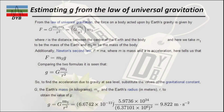To find the acceleration due to gravity at sea level, we substitute the values at sea level — the gravitational constant, the mass of the Earth, and the radius of the Earth — into the formula g = G·M₁ / r². This gives a final value of 9.822 meters per second squared.